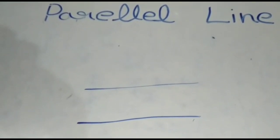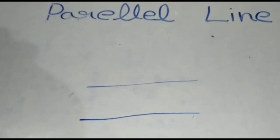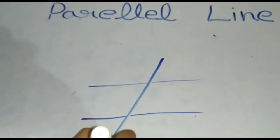Now we are learning about transversal lines. The transversal line is a line that passes through the parallel lines. This is a transversal line.